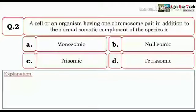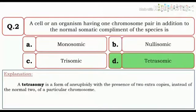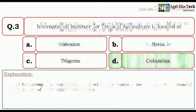Come to the next question. A cell or an organism having one chromosome pair in addition to the normal somatic complement of the species is monosomic, nullosomic, trisomic, and tetrasomic. So here the correct option would be tetrasomic. Because a tetrasomic is a form of aneuploidy with the presence of two extra copies of a particular chromosome instead of the normal two.